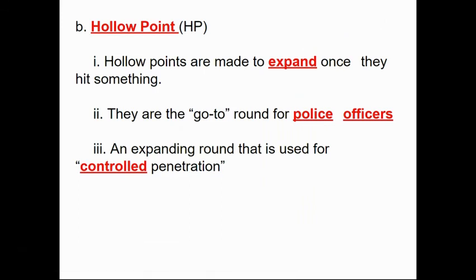A hollow point is different from the full metal jacket. It has an open end and is designed to expand or deform when it hits a target — it mushrooms or peels back. It's the go-to round for police officers, often called controlled penetration. If you're a police officer and you had to shoot someone, you don't want the bullet coming out the other side and hitting an innocent bystander. A hollow point expands when it hits something — it penetrates but doesn't exit the other side, and that's what they mean by controlled.